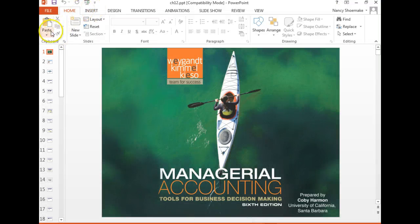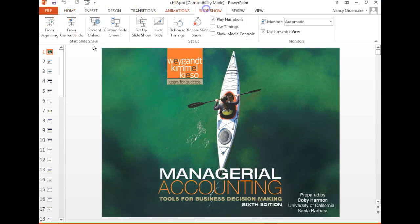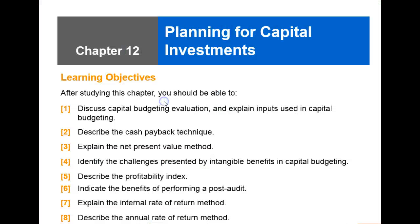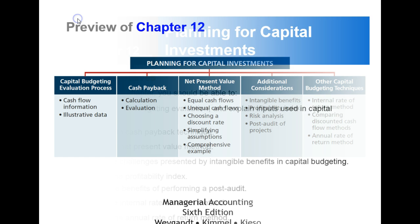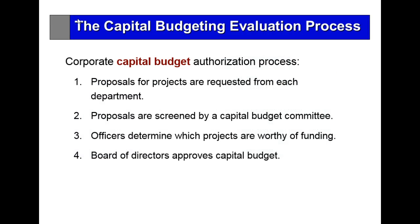We are going to begin talking about Chapter 12 and dealing with capital investments. All along we've been discussing managerial accounting and the processing portion. You need money to make money, and so we're going to spend this session today discussing Chapter 12, going over some of the problems. We talked about a capital budget, so let's begin talking about this capital budgeting process.